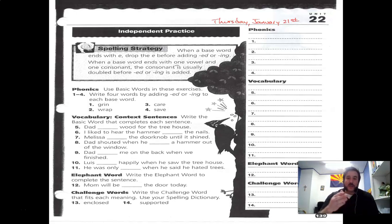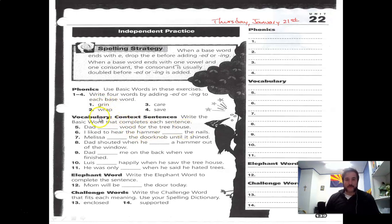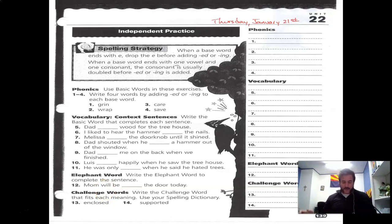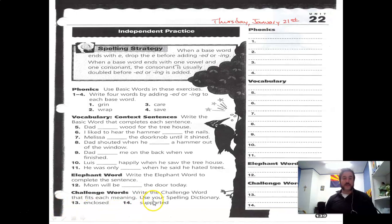Make sure you write the word correctly. For numbers five through twelve, you write the spelling word from unit 22 that makes sense in each sentence. The elephant word — I think you probably know — number 12 is 'fixing,' it's the only elephant word we have. For the challenge words, numbers 13 and 14, you only have two: 'propped' and 'framed.' That's your assignment for the day. Test day is already tomorrow — Lord's blessing, Jesus, praise your Savior.